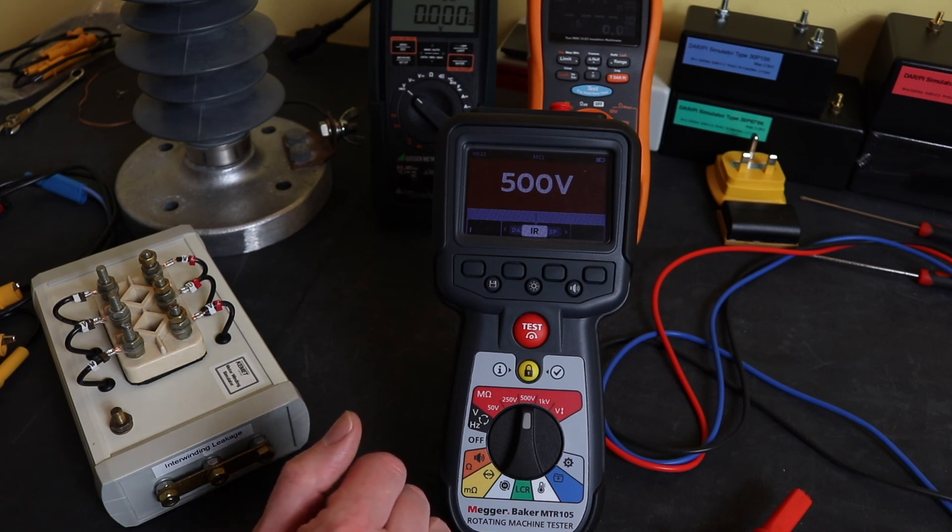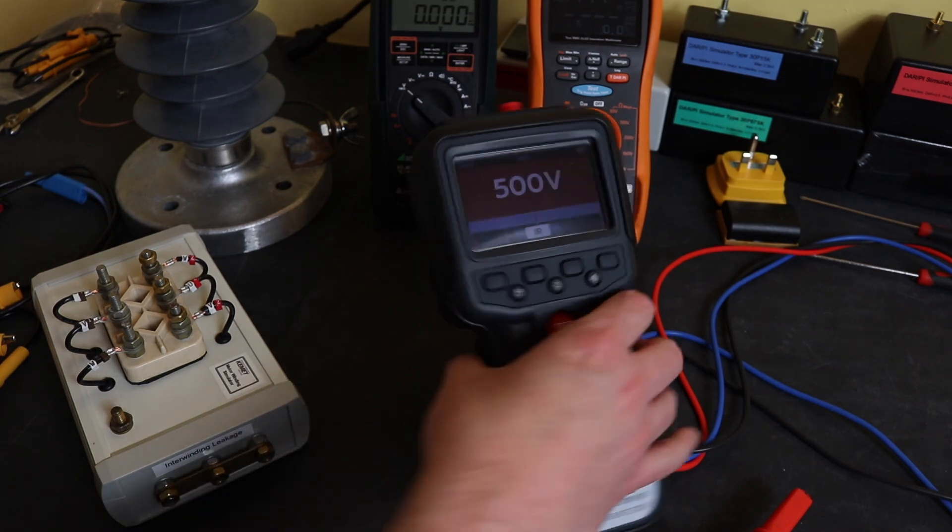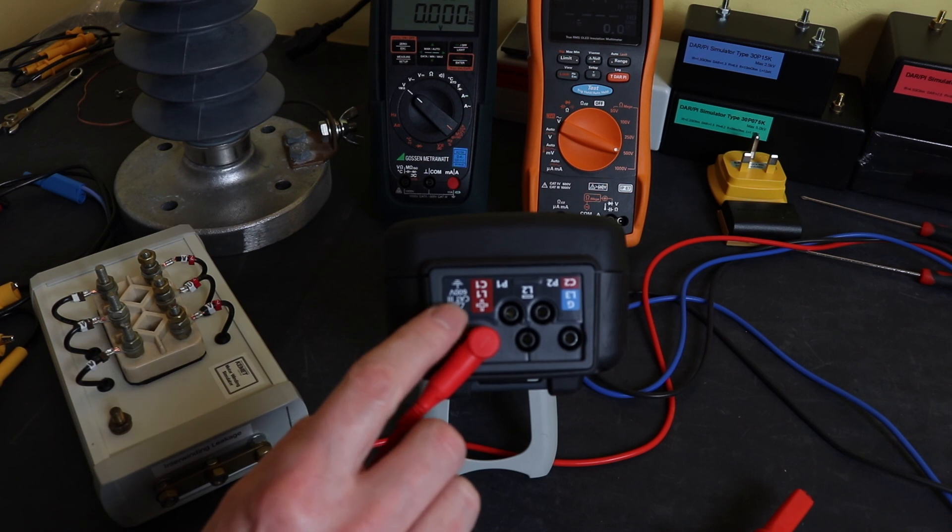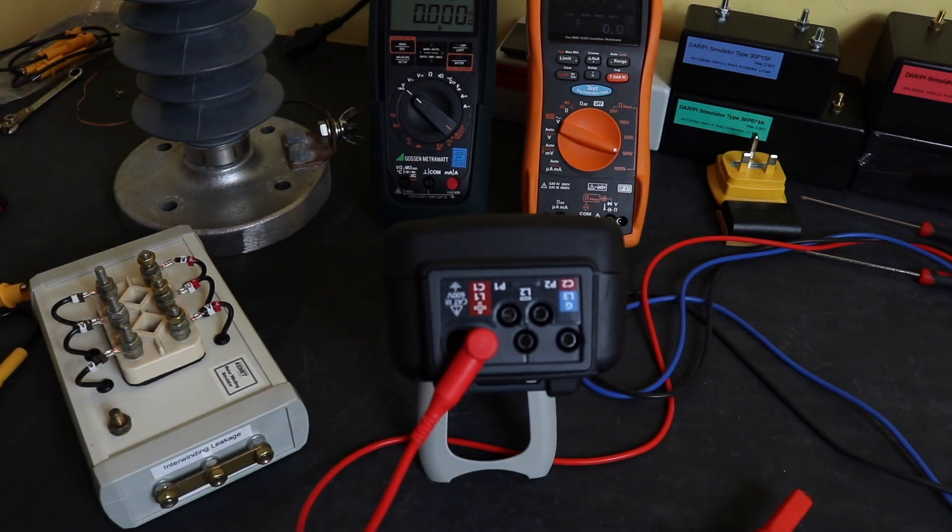There are actually three methods that I know for using a guard terminal during an insulation test. I'll just spin the test around. You see I have a lead here already in the positive terminal of the insulation tester.